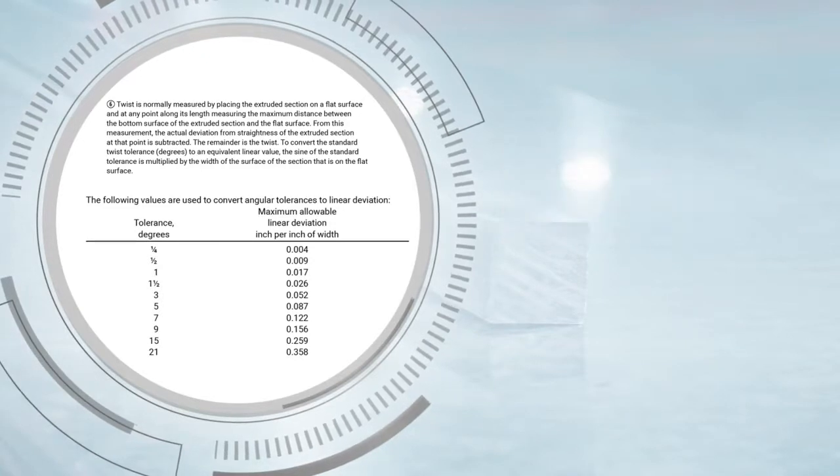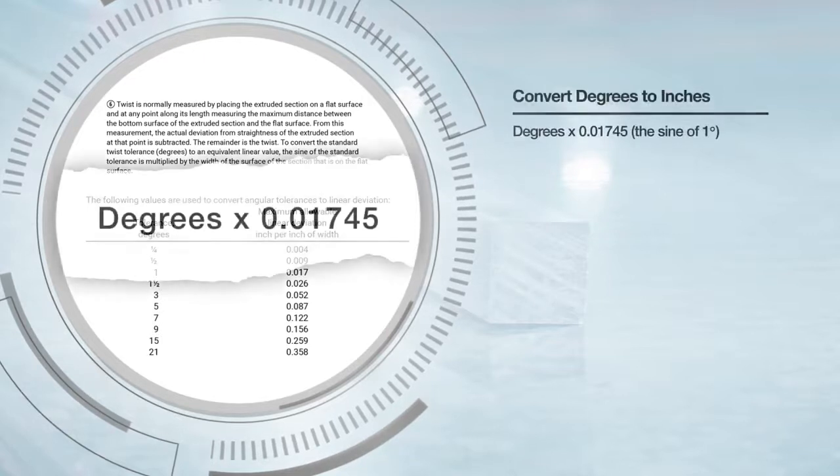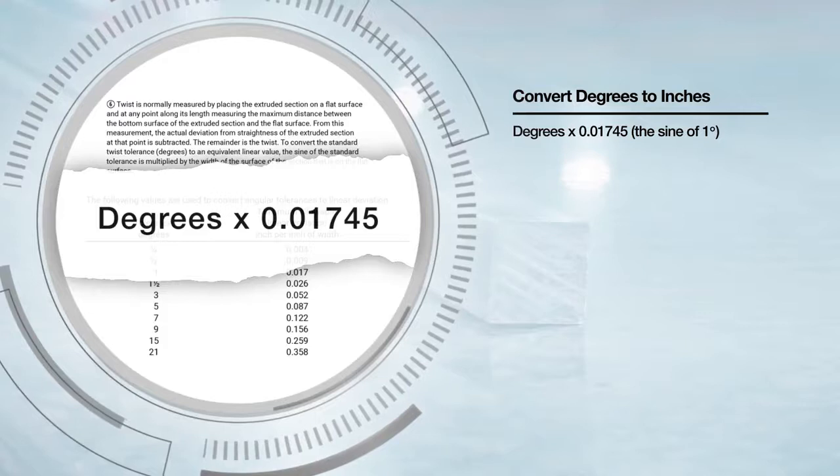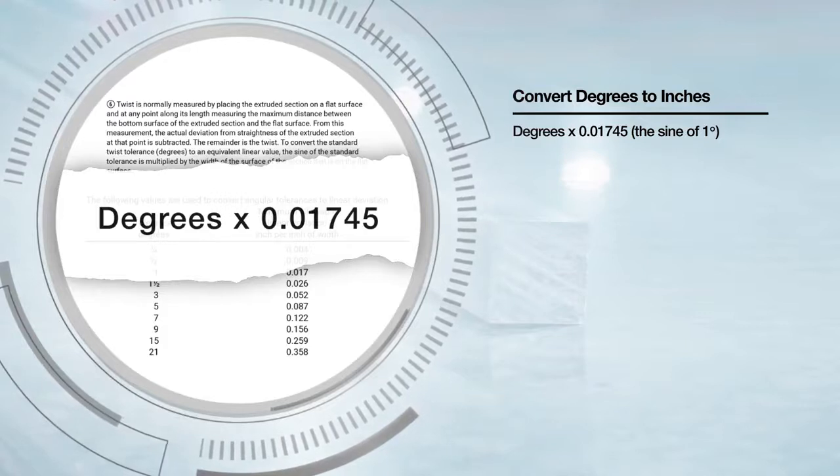An easy way to convert degrees to inches is simply by multiplying degrees by 0.01745, which is the sine of one degree.